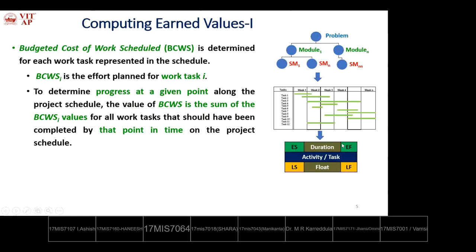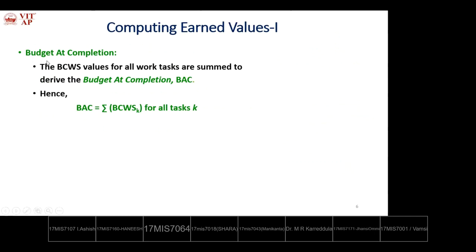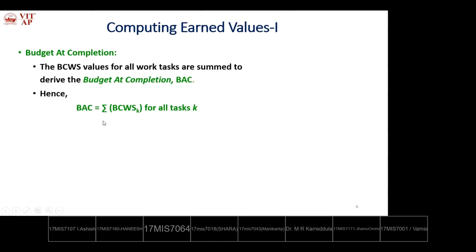Budget at Completion (BAC) is the sum of BCWS values for all work tasks, calculated prior to development: BAC = Σ BCWS(i) for i = 1 to N. BCWS is defined for lower-level elements; integrating all lower-level elements gives the parent-level information; adding all parent-level values gives grandparent-level information. BCWS goes top-to-bottom and BAC is calculated bottom-to-top.